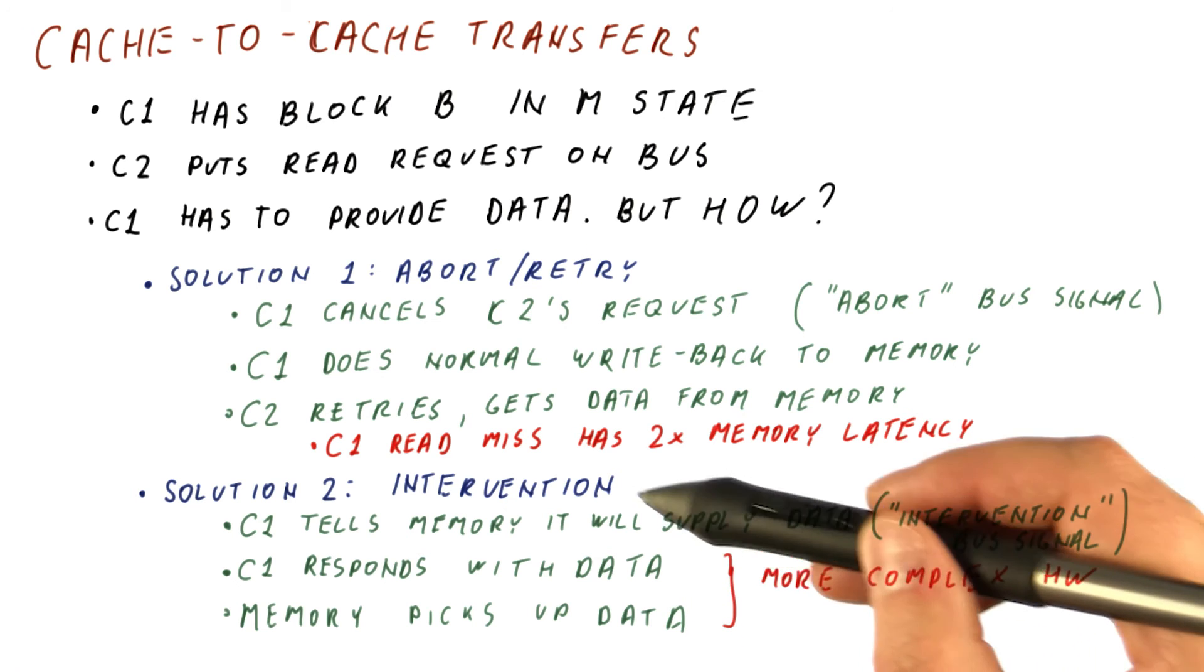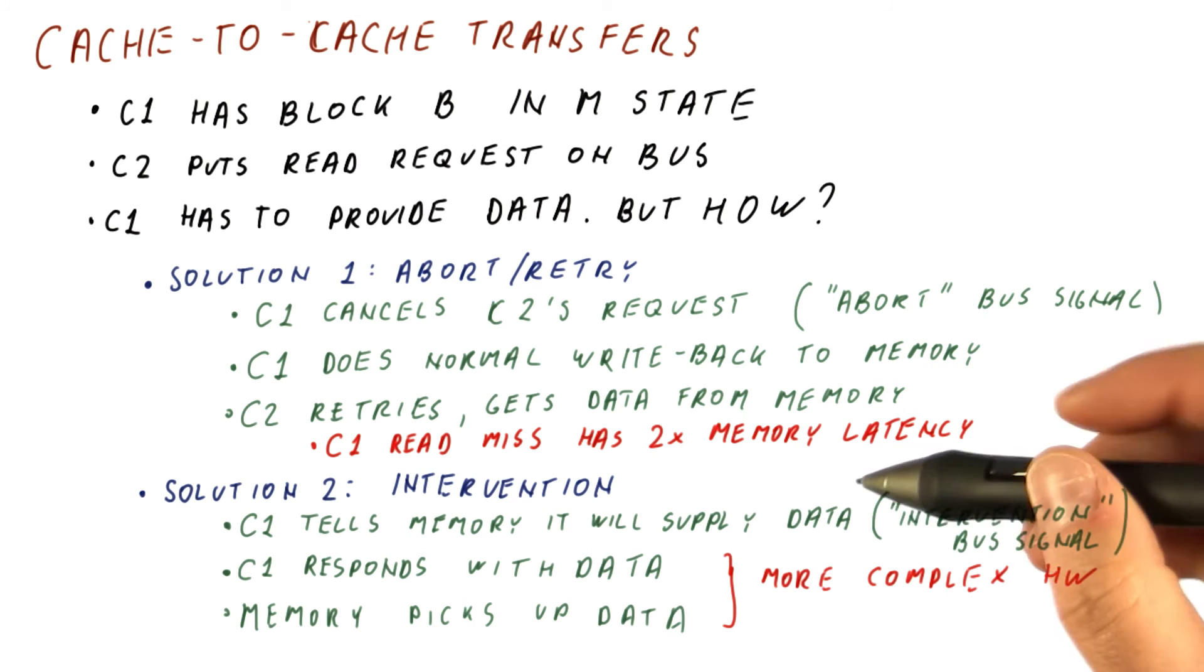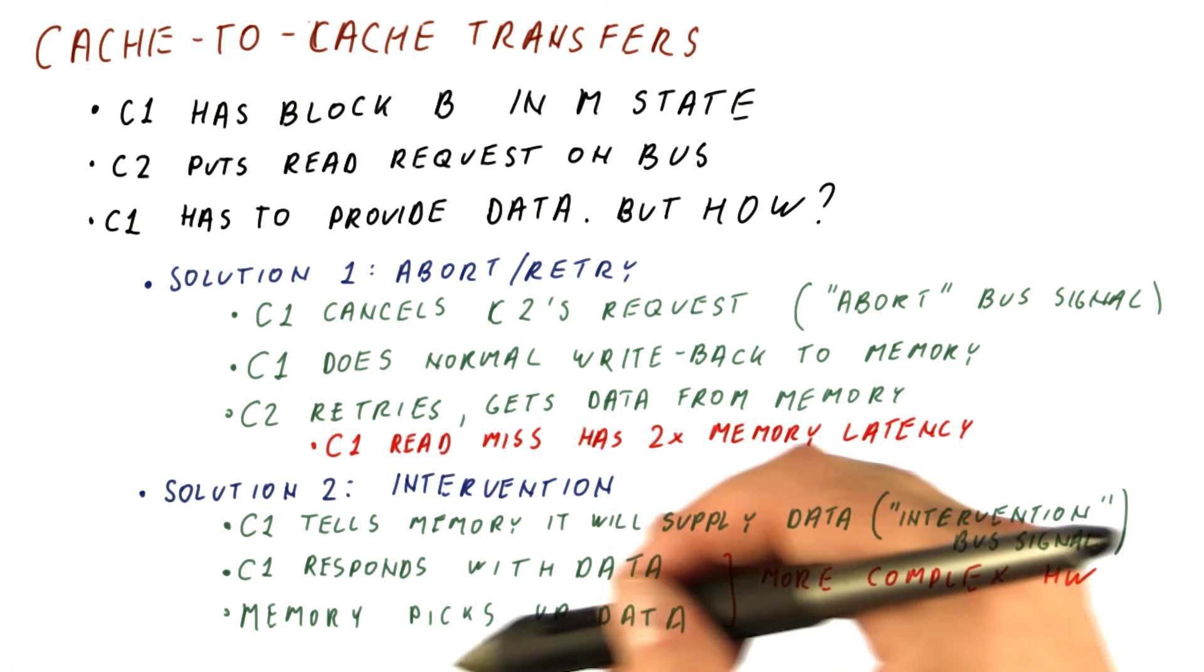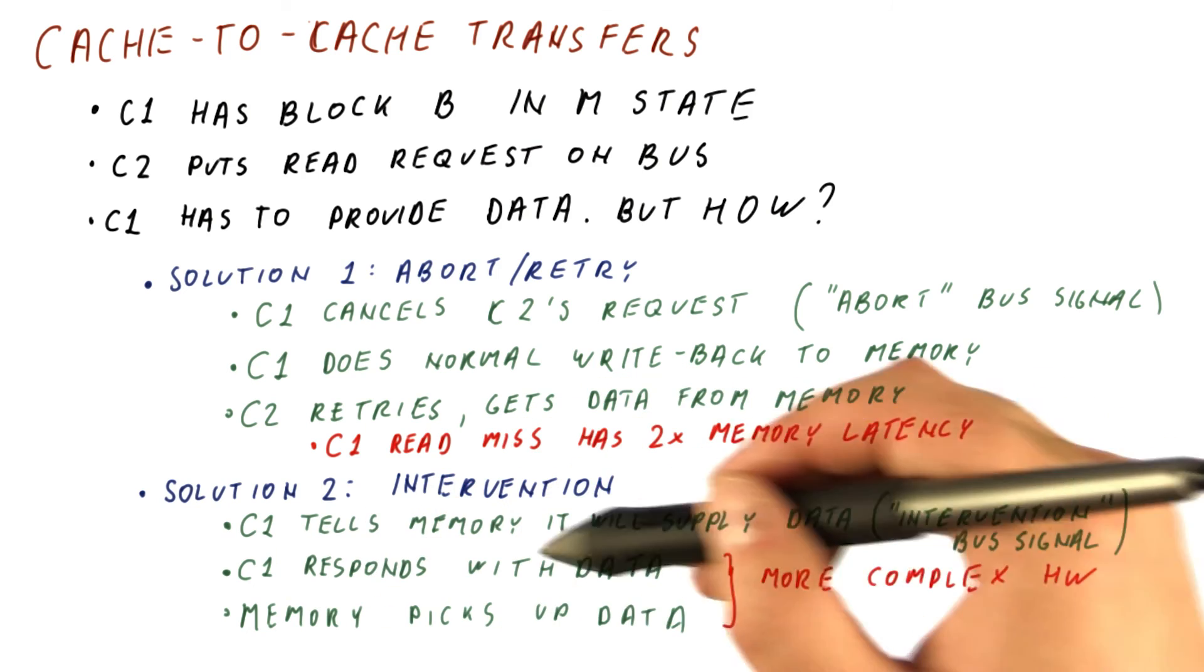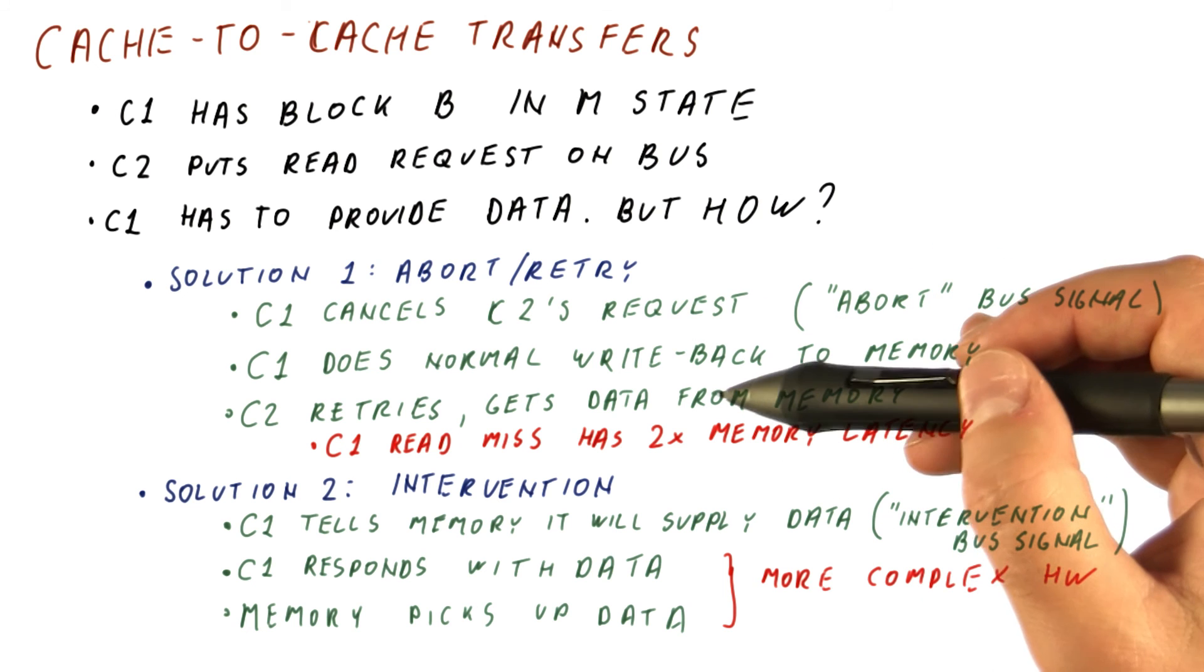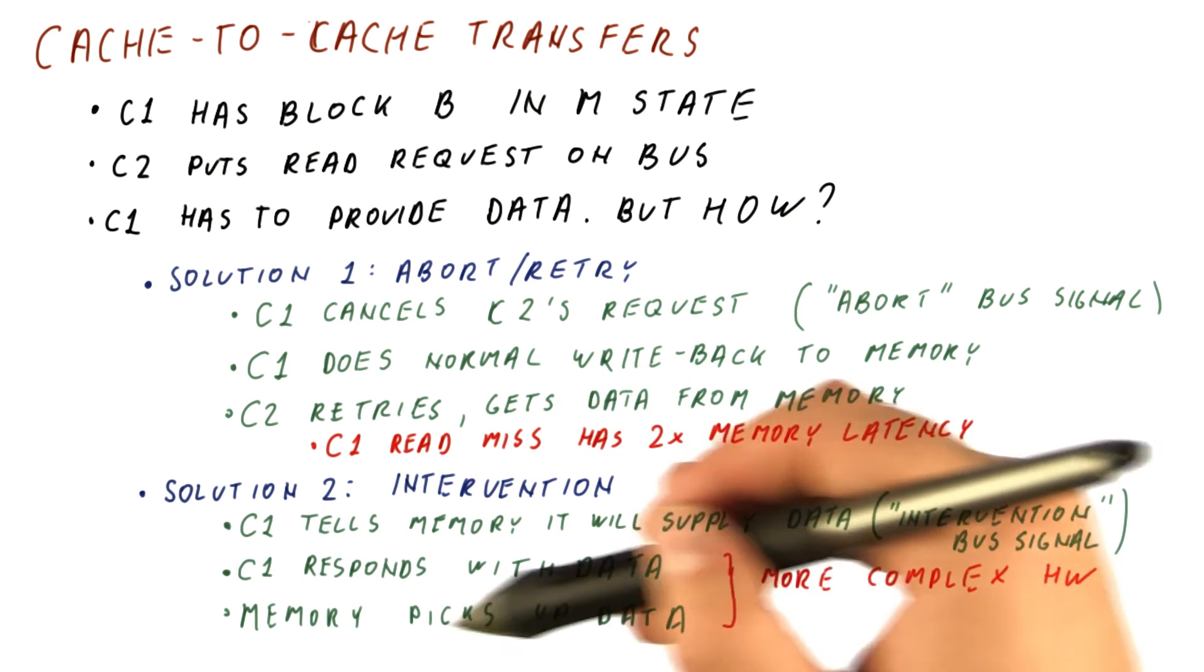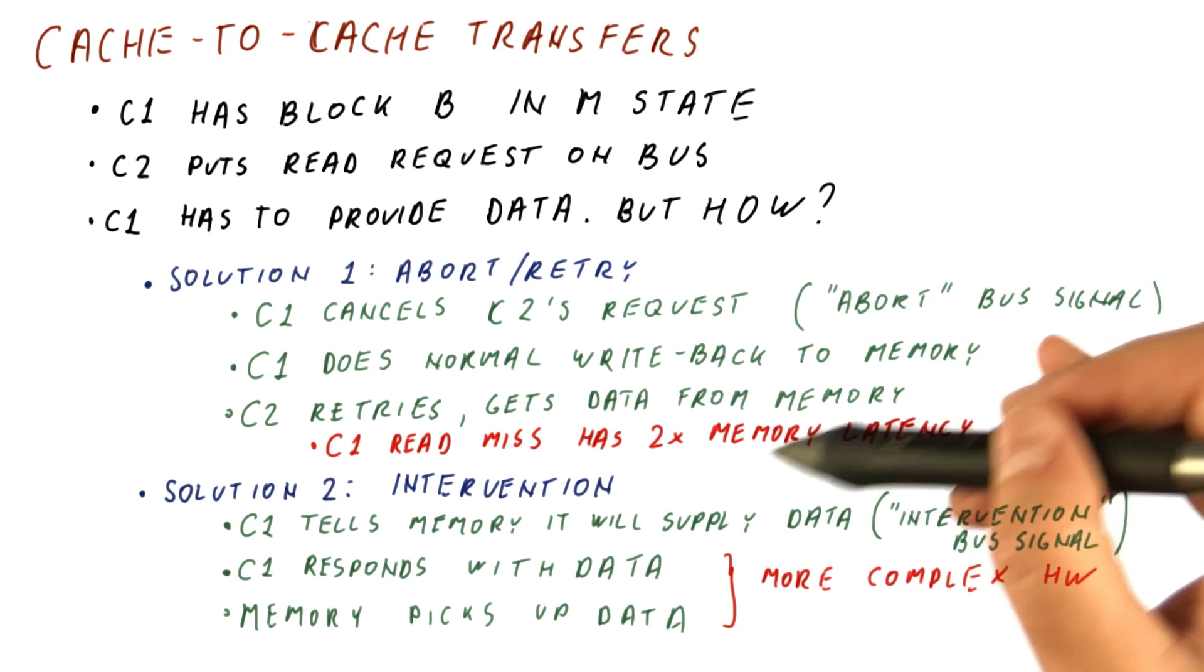In modern processors, we nowadays mostly use a variant of an intervention approach. And the reason is that, yes, the hardware is slightly more complex, but fancier snooping protocols actually eliminate the problem of memory picking up the data, and the complexity to respond with the data is not too large. In contrast here, the performance suffers. So pretty much between having a fancier protocol and having enough transistors from Moore's law to actually add this capability to caches, we pretty much can do this and not have to suffer in performance like this.